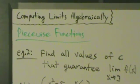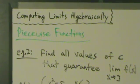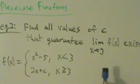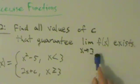Hey guys! Alright, so let's do another example with piecewise functions here. So let's say we have this function f of x, and we want to find all the values of c that guarantee that the limit as x approaches 3 of f of x exists.